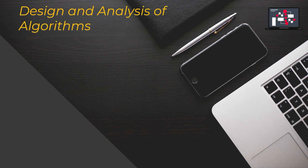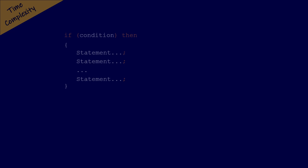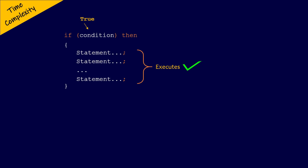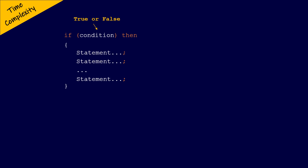Let us look at the time complexity of the if statement. Let us consider this part of the pseudocode. Here we have an if statement, and if the condition is true, then the statement or statements inside the if structure will be executed. If the condition is false, then the statements inside the if structure will not be executed. The condition in the if statement is evaluated only once, and does not depend upon the size of the input.